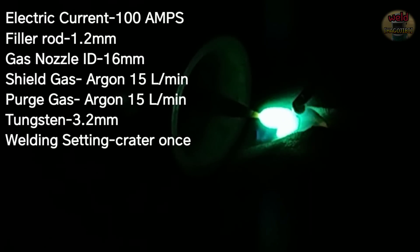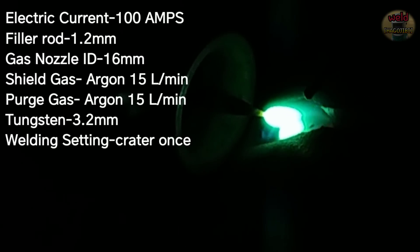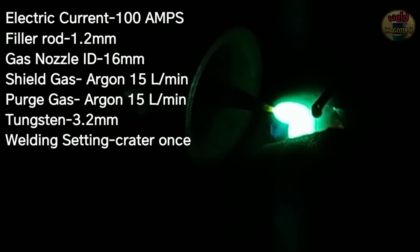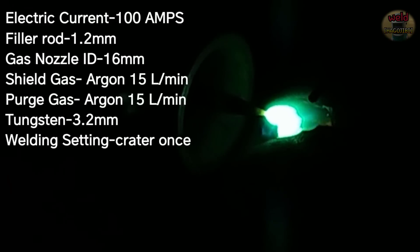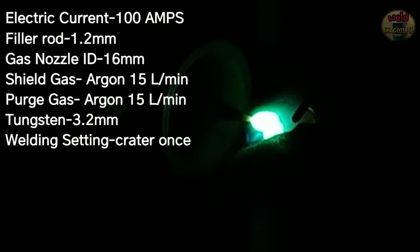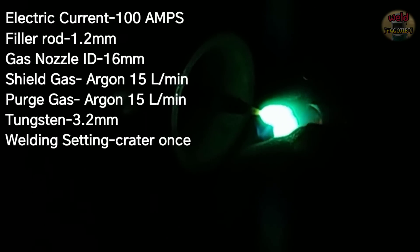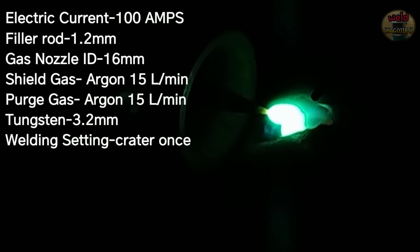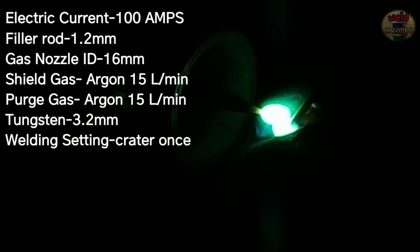The current used 100 A. I used the low current. When there's no gap between the pipes, you can't see the inside of the pipe. When you weld the low current, you feel more difficult to weld the pipe.